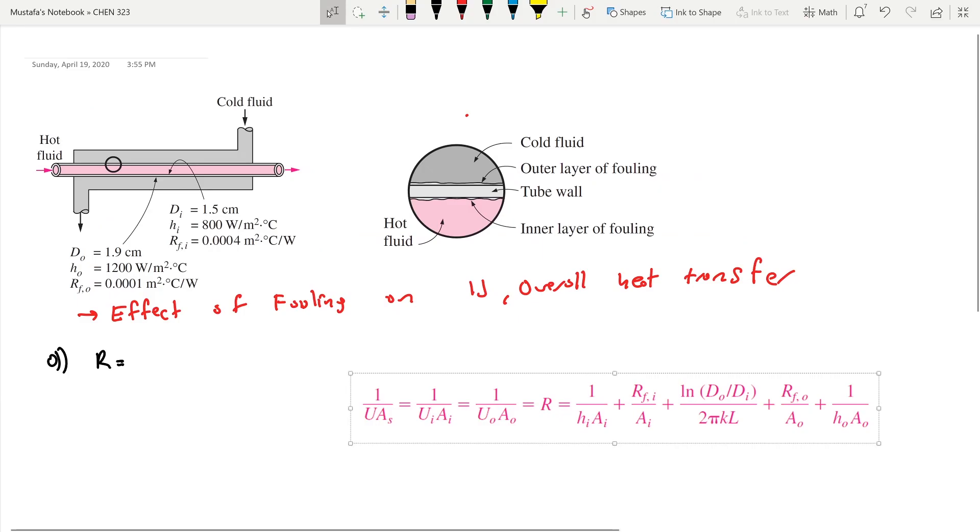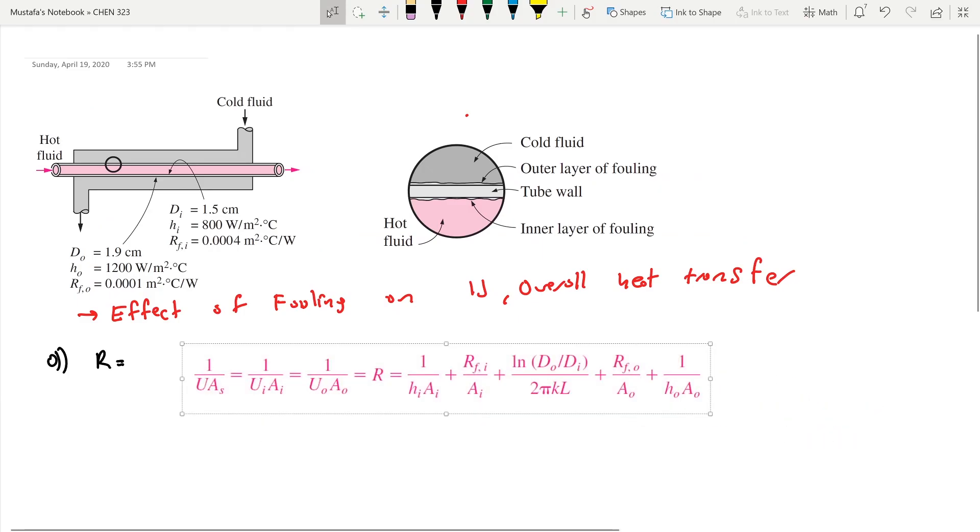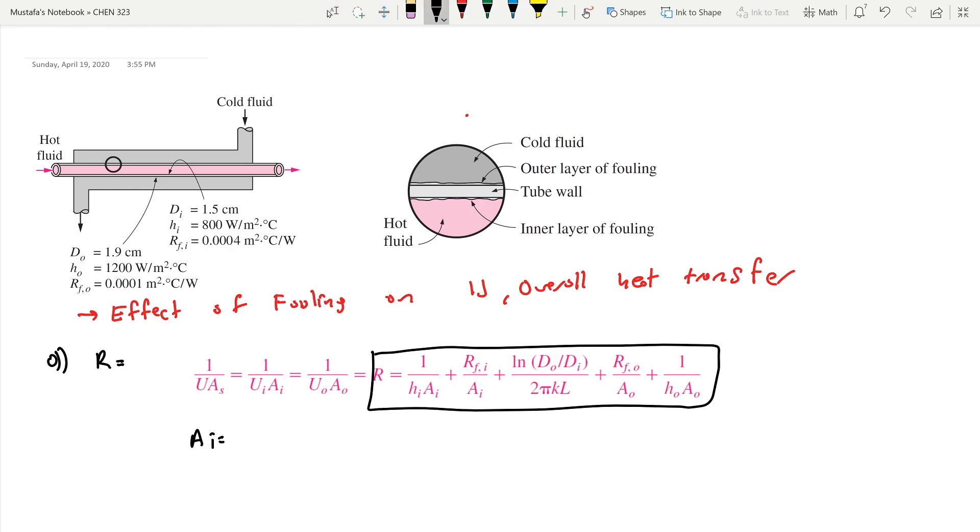Our first goal is to find the resistance, so I have to simply input all the values. Ai is π·Di·L and Ao is π·Do·L. We don't know L, but we are asked to find it per unit length.